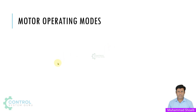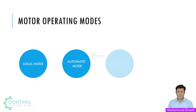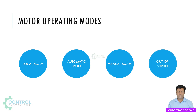For the motor block we have four different types of operating modes: local mode, automatic mode, manual mode, and out of service mode. In this particular tutorial we will discuss automatic mode and manual mode.